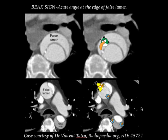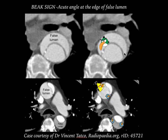Now let us see the beak sign. This is an excellent illustration from Radiopaedia by Dr. Vincent Tatko. You can see the intimal flap, intimal calcium displacement, false lumen, and true lumen. The contrast density of the false lumen is less, while the true lumen has higher density. The false lumen is larger and the true lumen is smaller. The beak sign is an acute angulation at the edge of the false lumen — you can see the acute angle here. Once you find this acute angle, that is the false lumen. It is the most important sign for differentiating true from false lumen.